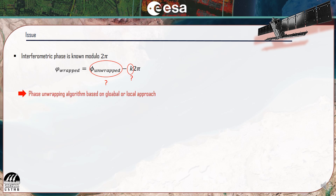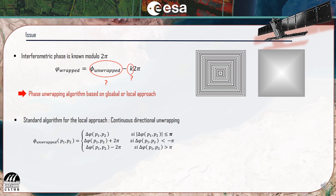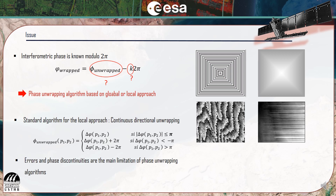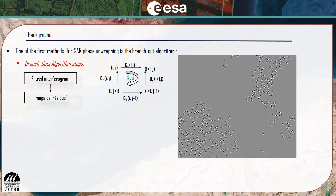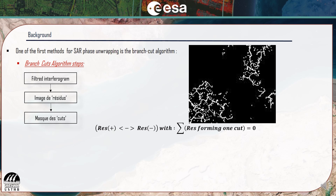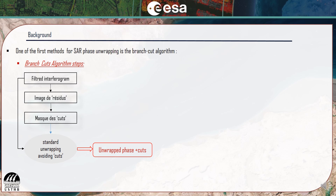Many methods were developed using a global or local approach. The standard algorithm for a local approach unwraps the phase following a continuous directional path, but phase discontinuities generate a propagated error. To overcome this limitation, the branch-cut algorithm was the first method developed. It consists of first locating the phase discontinuities by computing a residue grid, then a branch-cut mask is generated by connecting residues of opposite polarities, and finally it proceeds with a standard phase unwrapping, avoiding the cut.